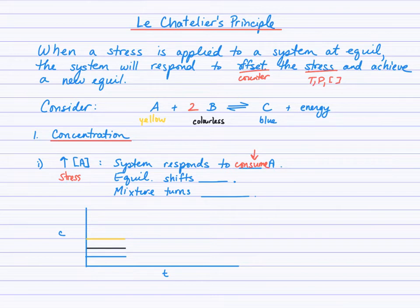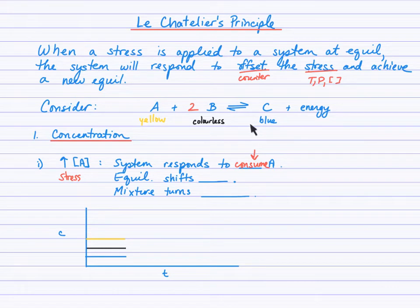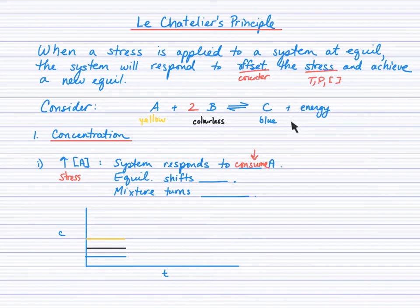Which way does the equilibrium position shift? When the system responds to consume A, does that speed up the forward reaction or the reverse reaction? Which direction consumes A — decreases A, uses up A? The forward direction. That means the forward reaction will speed up, and eventually the reverse reaction will increase and a new equilibrium position will be reached. Because the forward rate initially sped up, the equilibrium position shifts right, producing more C.